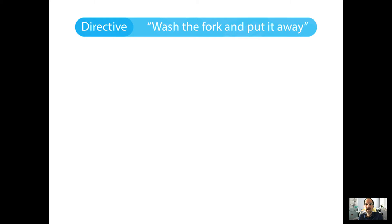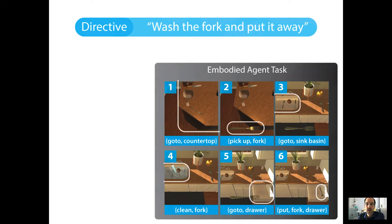To help ground this task a bit more, in ALFRED, the virtual agent is given a natural language directive for an everyday task, such as this one: wash the fork and put it away. What the model normally has to do is reduce that directive into a series of steps like going to the countertop and picking up a fork, going to the sink, washing the fork, and so on and so forth, that perform that task in one of the dozens of virtual home environments that are in ALFRED.